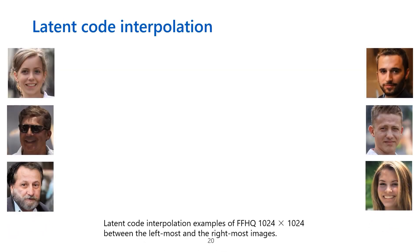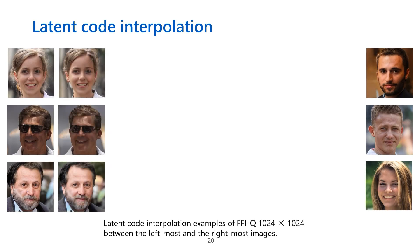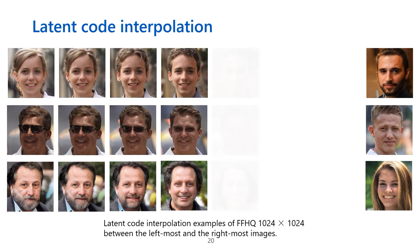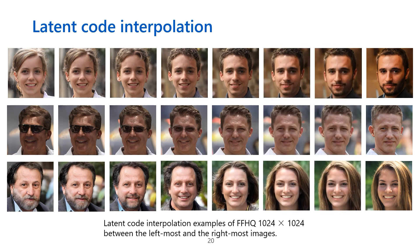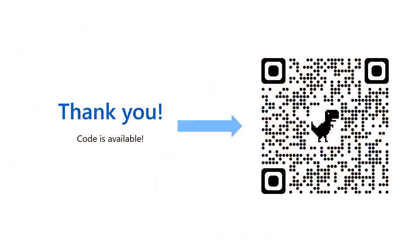We randomly sample two latent codes in the latent space and perform linear interpolation between them. As shown in the figure, our StyleSwin produces meaningful image morphing with different styles. Our code is also available. Thank you for watching.